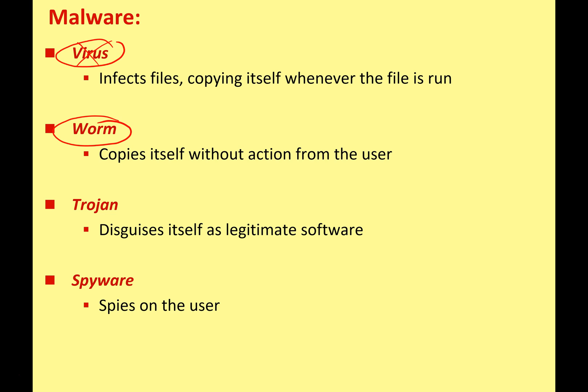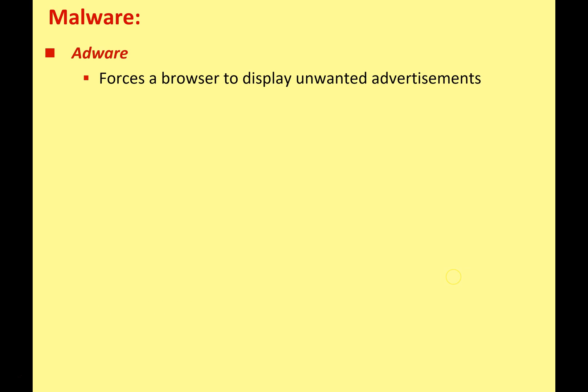Spyware does exactly what it says — it's software that, once on your computer, can spy on you, monitor your web viewing habits, and do other things you really don't want it to do. Adware forces your browser to display unwanted advertisements, and the people behind the adware can then make money from you viewing these advertisements.